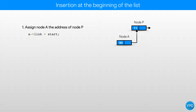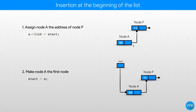Let's see how to code it. We first assign the address of node P to the link part of node A. The address of node P was in start, so we write A arrow link equal to start. This will make the link part of node A point to node P. Now we have to make start point to node A, so we simply write start equals to A.